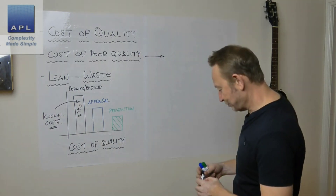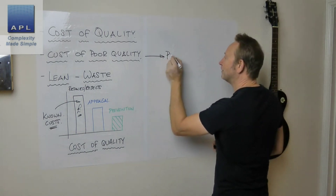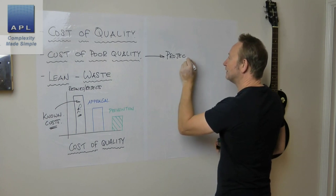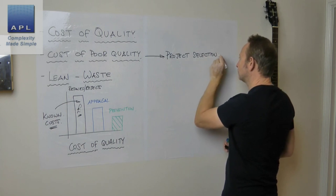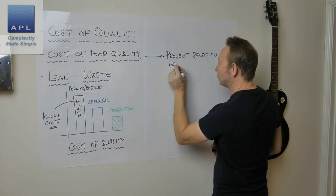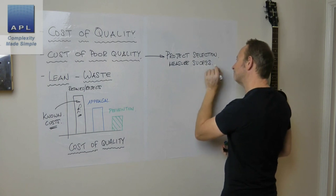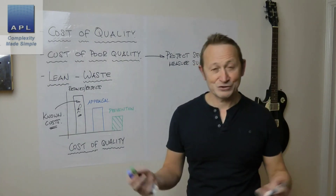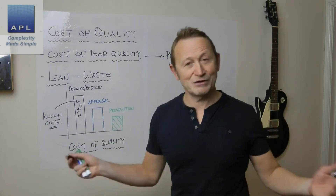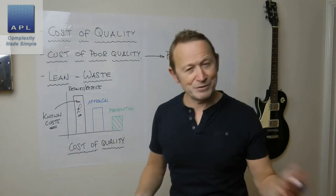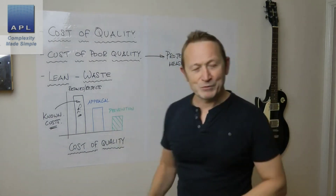The cost of poor quality is used mainly for two things: project selection and measuring success. You've probably got too many problems to tackle at once, so you need to pick some. The biggest cost of poor quality might guide which to choose — however, I have a problem with this approach.